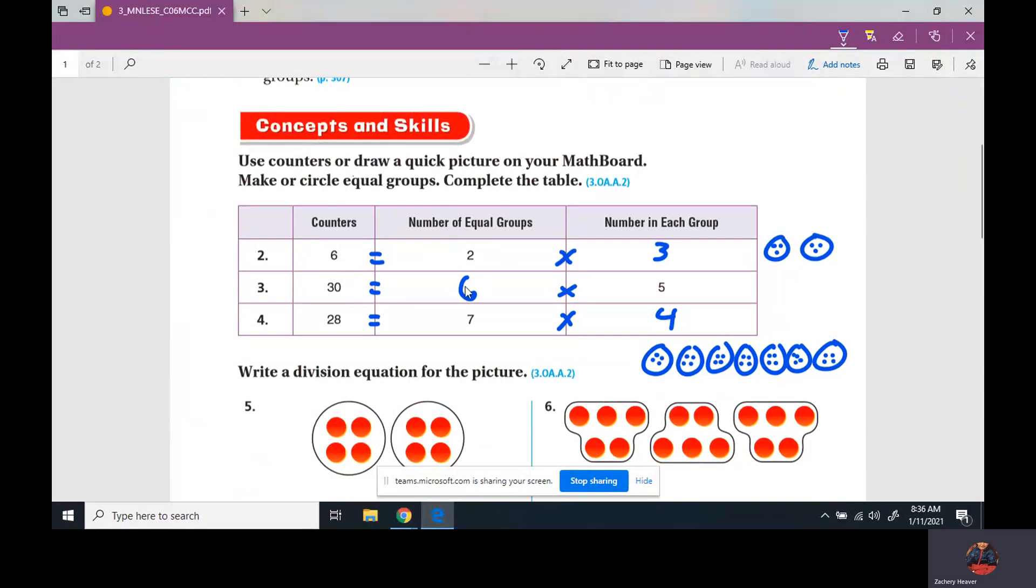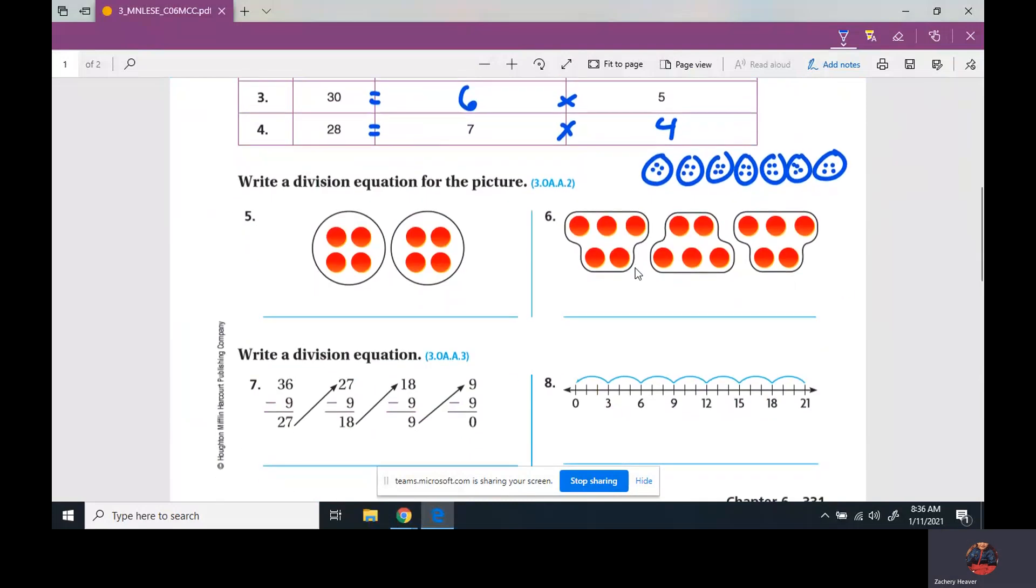So the only one that was a little bit different was the second one. That means if you know the total number of counters and the numbers in each group, you can draw the counters and circle how many is in each group.